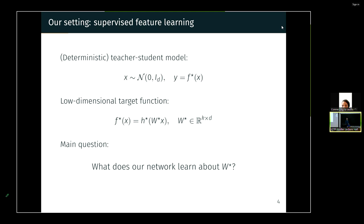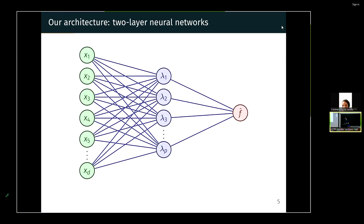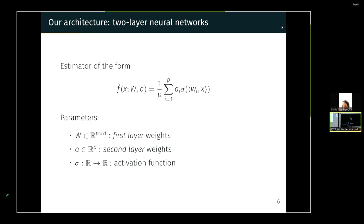The main question is: does the network understand that there is something low-dimensional about this task, or does it just stay in the function-fitting regime and not learn anything? The network we consider is a simple two-layer neural network. You have the first-layer weights, and then the second-layer weights giving our estimator — a fancy name for an estimator with p first-layer weights, a dot product between x and those weights, a non-linearity applied element-wise, and second-layer weights a_i combining to form a single scalar.